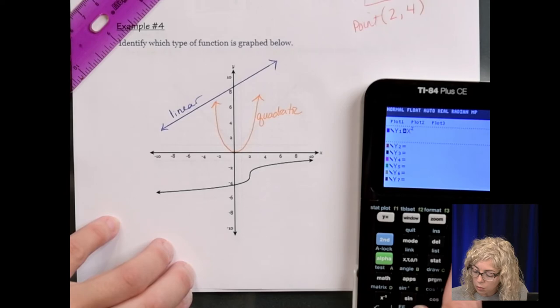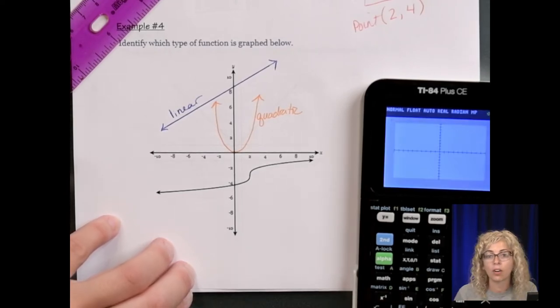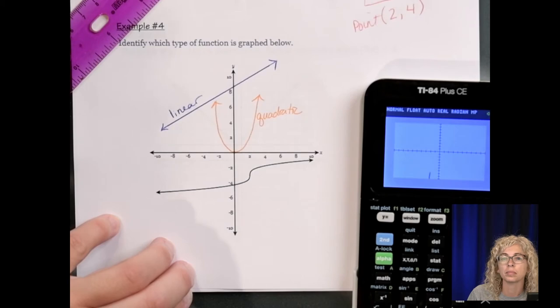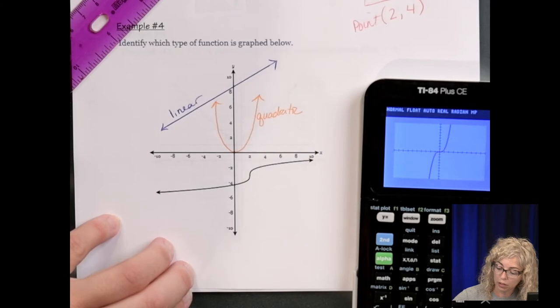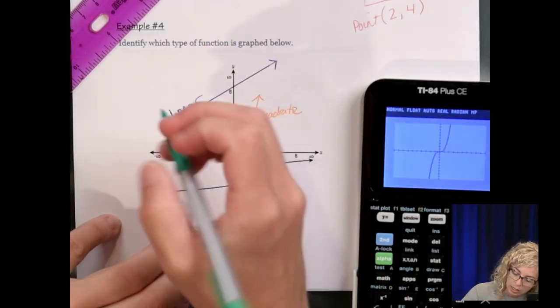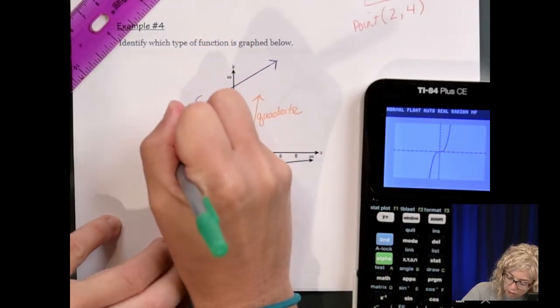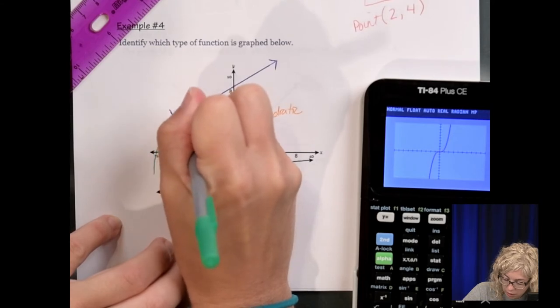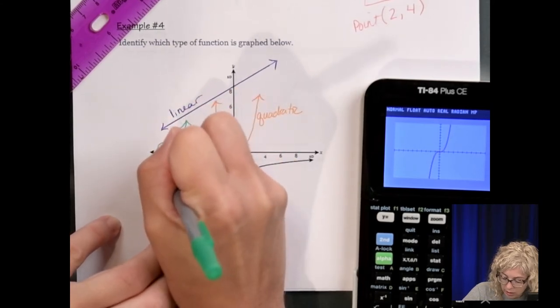Now I'm going to change that y equals to the exponent of 3. Hit graph. So you can see something like that is the cubic function. So I'll use green. And we'll do that over here. Something like that is the cubic.